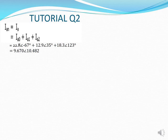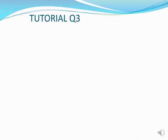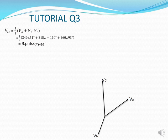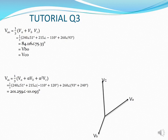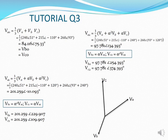Question three: given the voltages, work out VA0 which gives VB0 and VC0, then work out VA1 from which you can deduce VB1 and VC1, and then VA2 from which you deduce VB2 and VC2. Thank you very much.